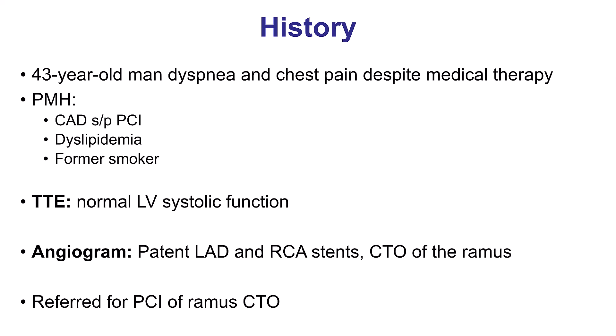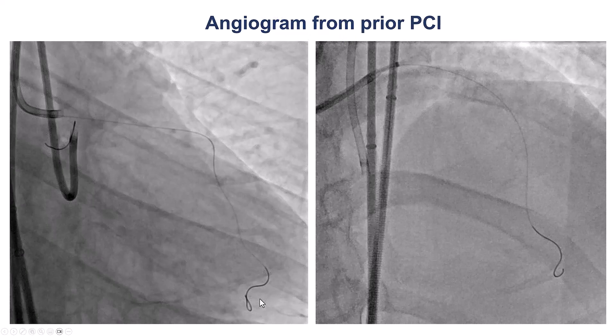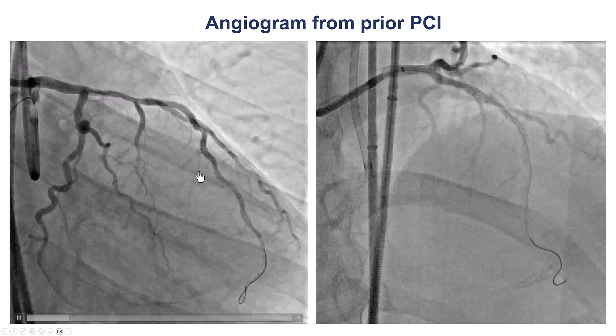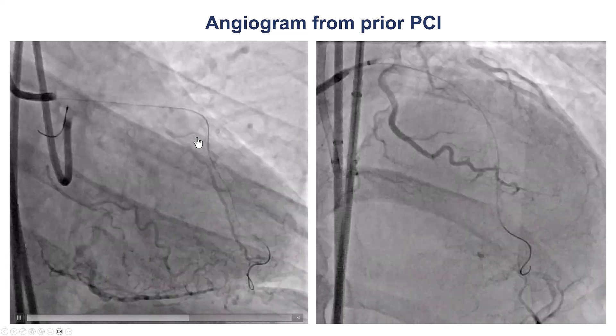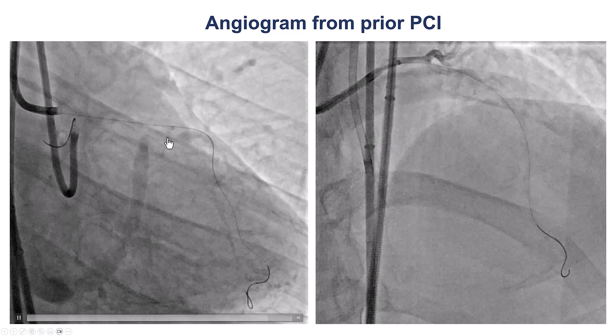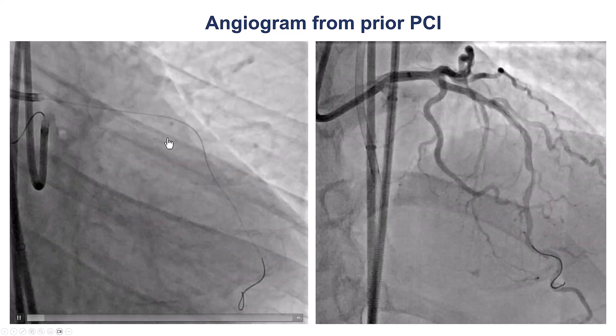The patient was a very young man who had undergone PCI of the right coronary artery and the LAD, but despite that, he continued to have chest discomfort. He was sent for PCI of the Ramos branch, and this is the coronary angiogram. He had this very large vessel on the lateral wall, which seemed to be the Ramos branch.